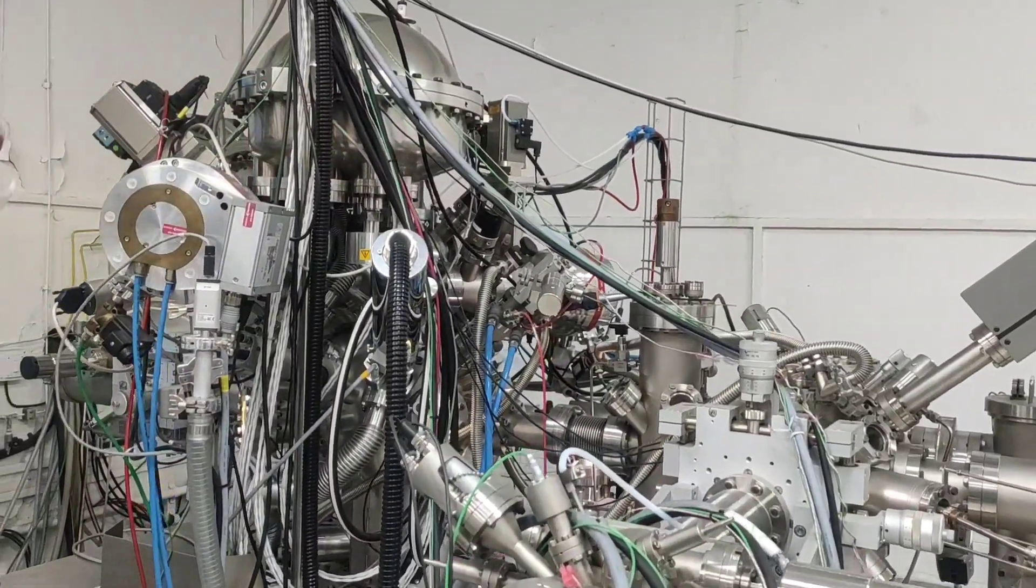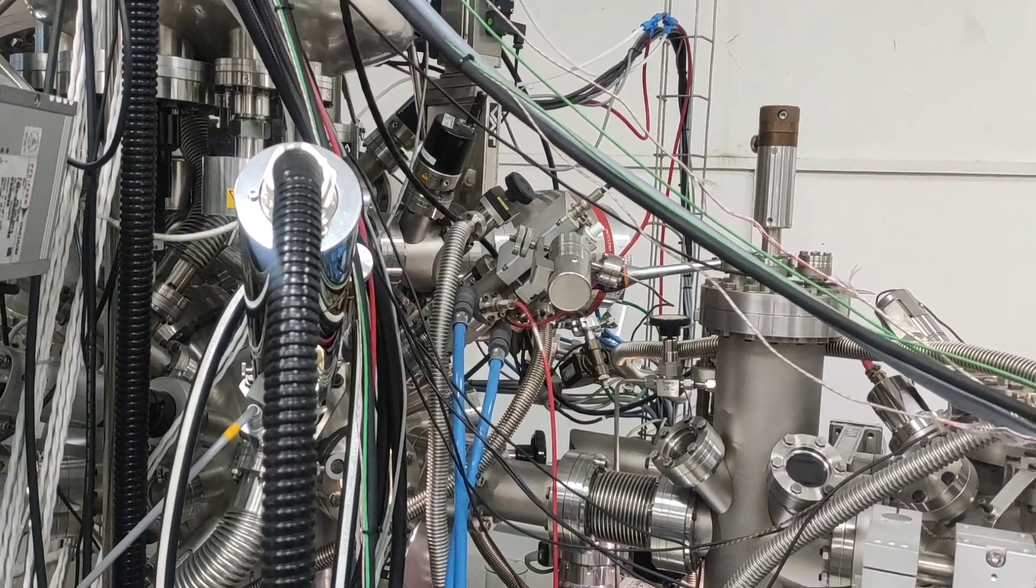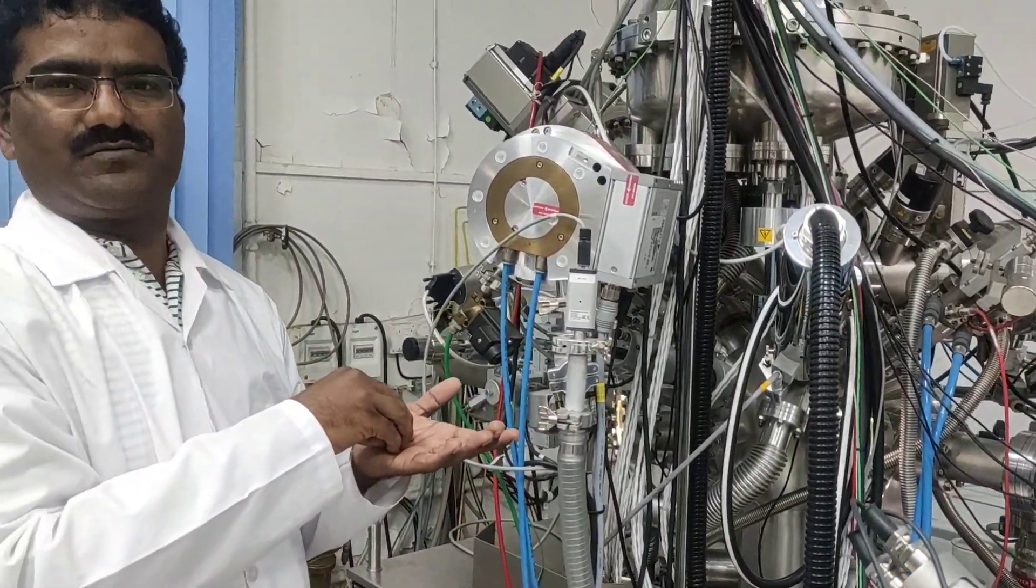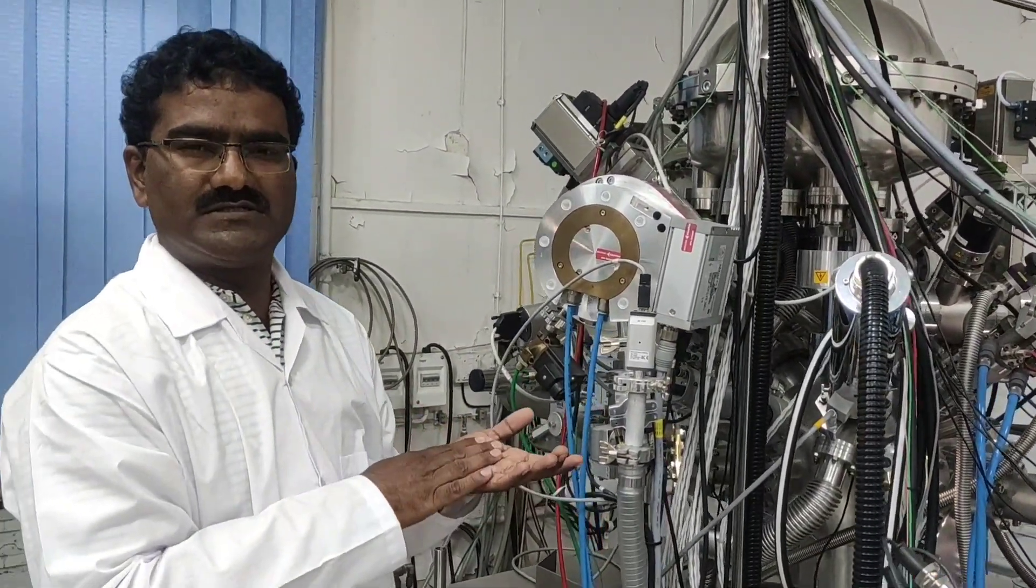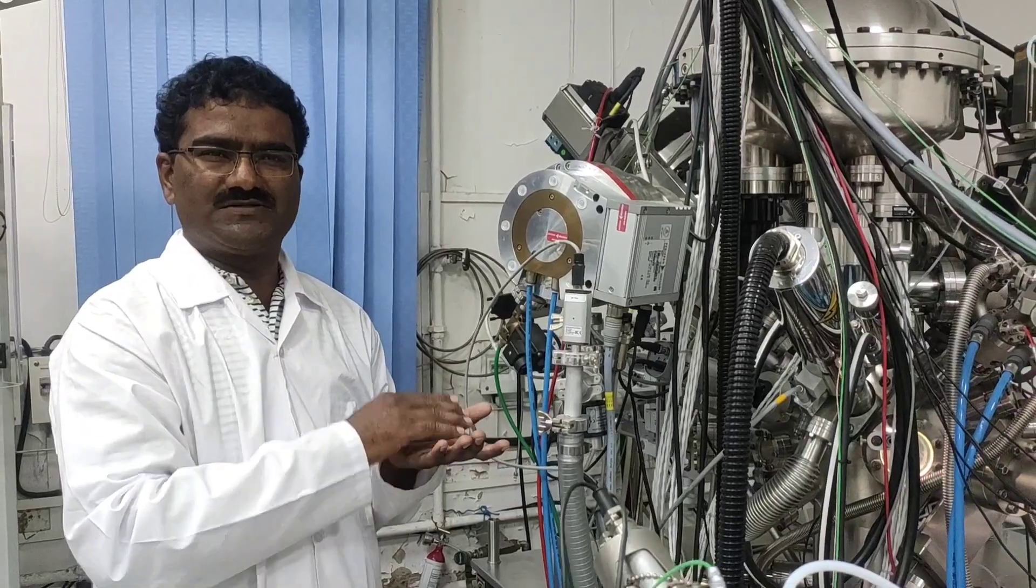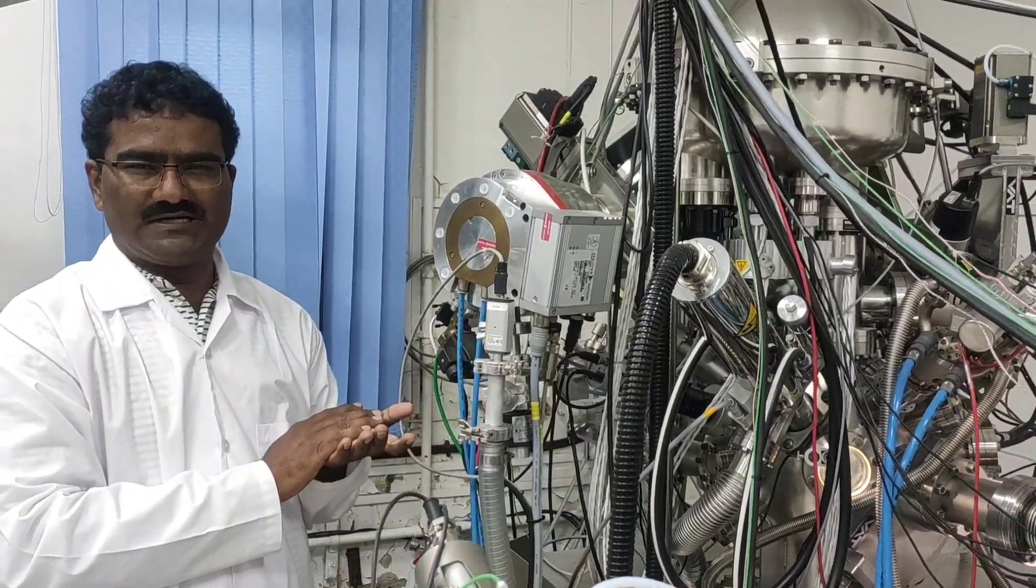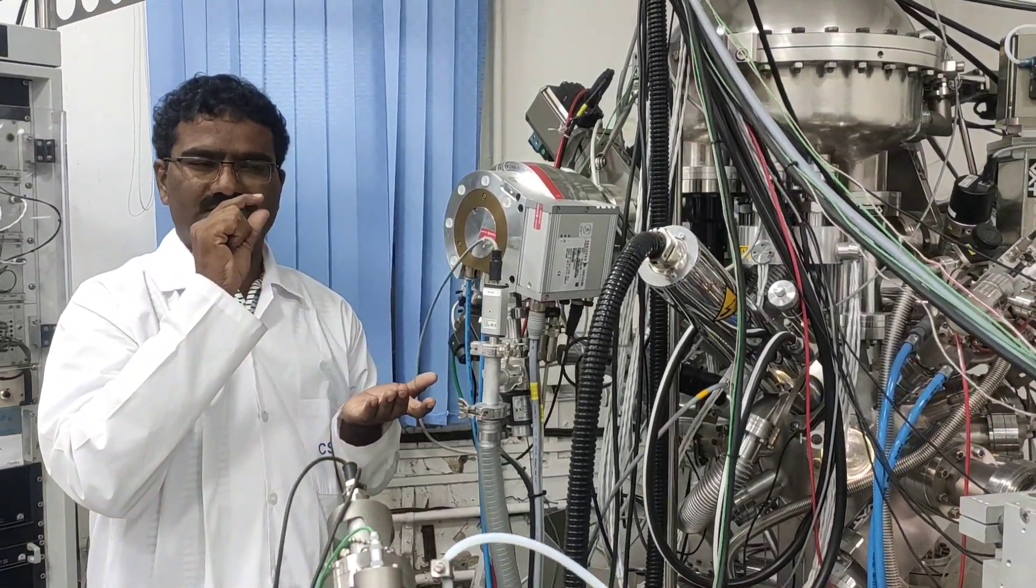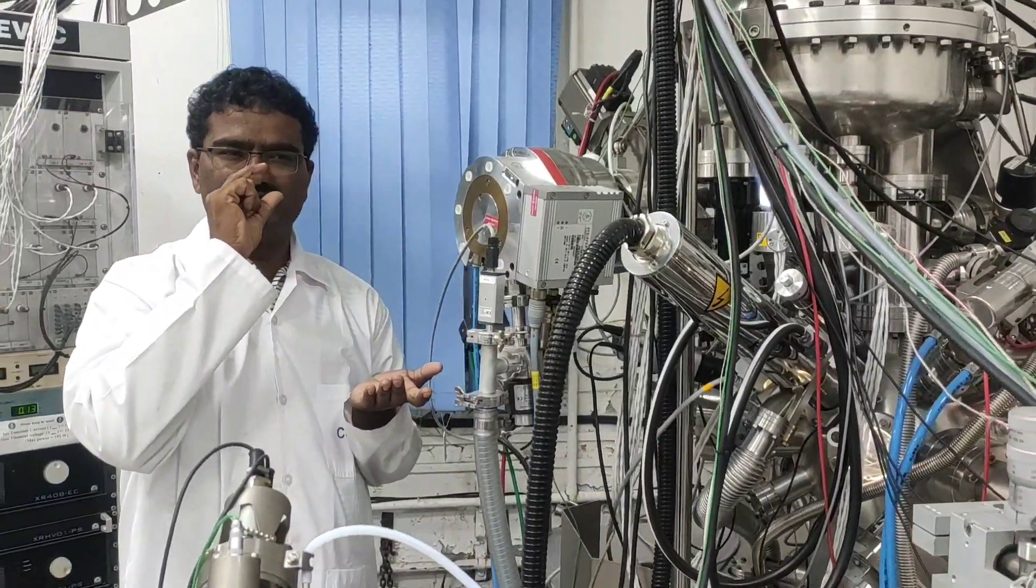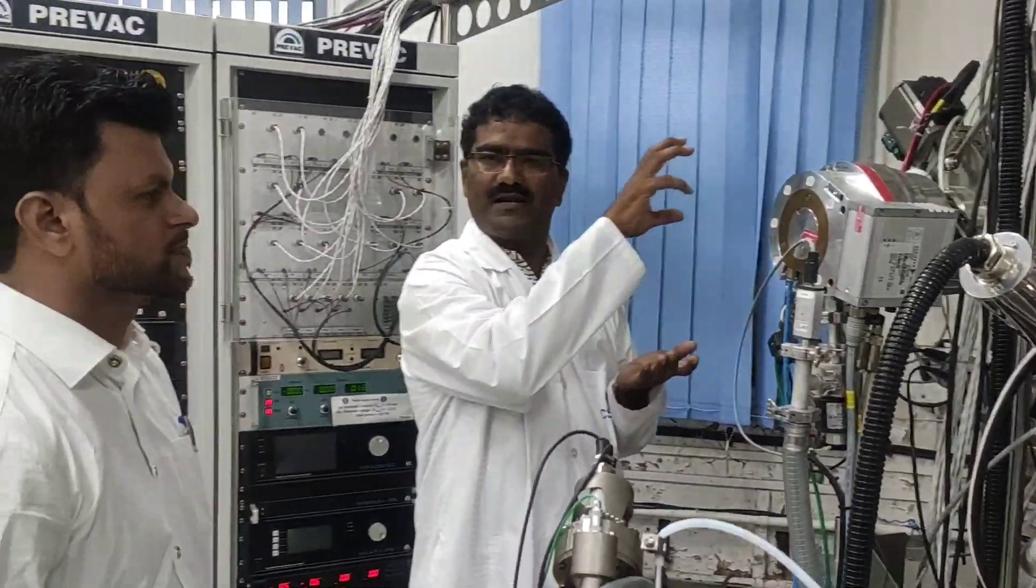Secondly, we have ultraviolet photoelectron spectroscopy also. That is the UV source. Here UV source energy is 21.21 electron volts. Those photons again bombard on the surface of the samples and interact with the photoelectrons. Then photoelectrons are generated and emitted from the surface. Ultraviolet photoelectron spectroscopy is a very surface sensitive technique. We can identify only one or two layers of the surface. But X-ray photoelectron spectroscopy is like X-rays penetrate through the sample up to 10 nanometers. Photoelectrons emit from the surface of 10 nanometers of the sample and those photoelectrons are analyzed by the analyzer.